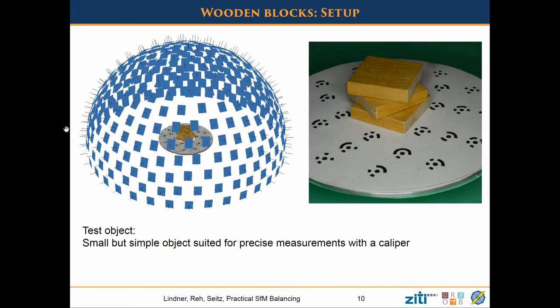For the first object we just had a few wooden blocks together. It's quite simple but has enough structure for structure from motion to reconstruct. It's shown in the semi-dome with the reconstructed cameras. We chose this simple object because we can measure it quite precisely with a caliper. When we reconstructed it, we found that our reconstruction — through those markers — is accurate to about 0.16mm, around one or two tenths of a millimeter. So we can use this as a good reference.